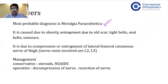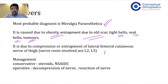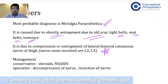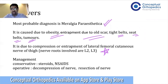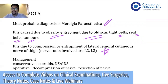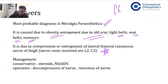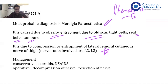The etiology of meralgia paraesthetica includes compression of the nerve due to obesity, old scars, tight belts, seat belts, or tumors — it is caused by compression or entrapment of the lateral femoral cutaneous nerve of the thigh. The nerve root involved is L2-L3. Treatment begins conservatively with steroids and NSAIDs; if symptoms persist, surgery such as decompression or resection of the nerve is performed. Similarly, chiralgia paraesthetica involves entrapment of the superficial radial nerve in the upper limb — both are entrapment syndromes with predominantly sensory presentation.